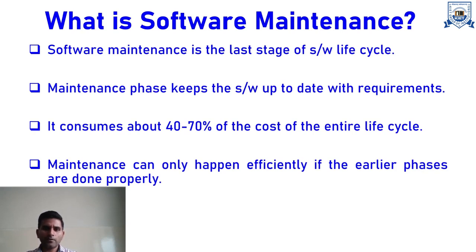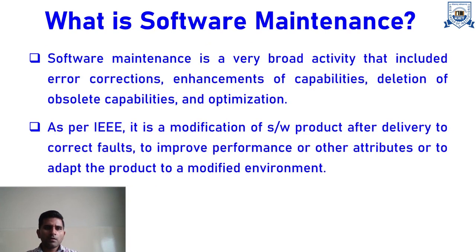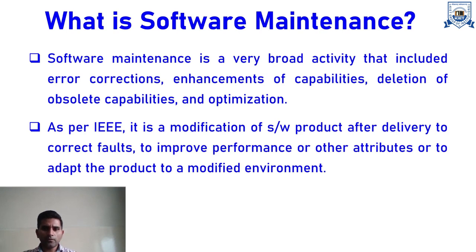For instance, if you have not done your testing phase appropriately and have left bugs in your software, then once you deliver that software to the client, a lot of errors will appear during implementation. The maintenance overhead will remain even after delivery. That is why earlier phases of the SDLC should be implemented accurately. Software maintenance is a very productive activity that includes error correction — both syntax errors and logic errors — enhancement of capabilities, deletion of obsolete components, and finally optimization.